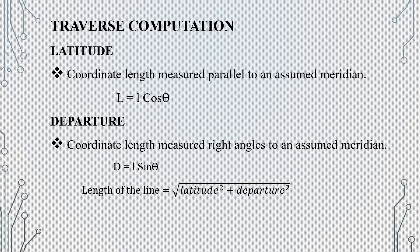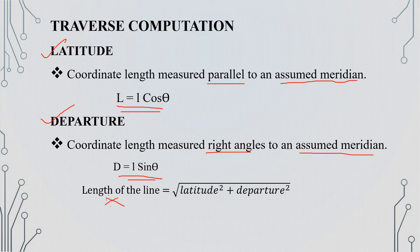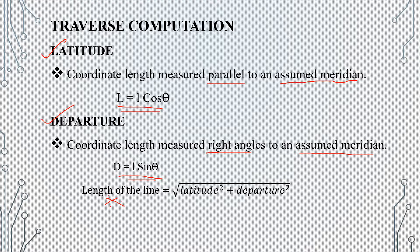Next is traverse computation. The most important terms are latitude and departure. Latitude is the coordinate length measured parallel to an assumed meridian. Departure is measured as the coordinate length. The length of the line is equal to the square root of latitude squared plus departure squared. The departure equals length times sin theta. Sign convention: northing latitude is positive, southing is negative; easting departure is positive, westing is negative. Please like, share, and subscribe. Thank you for watching.